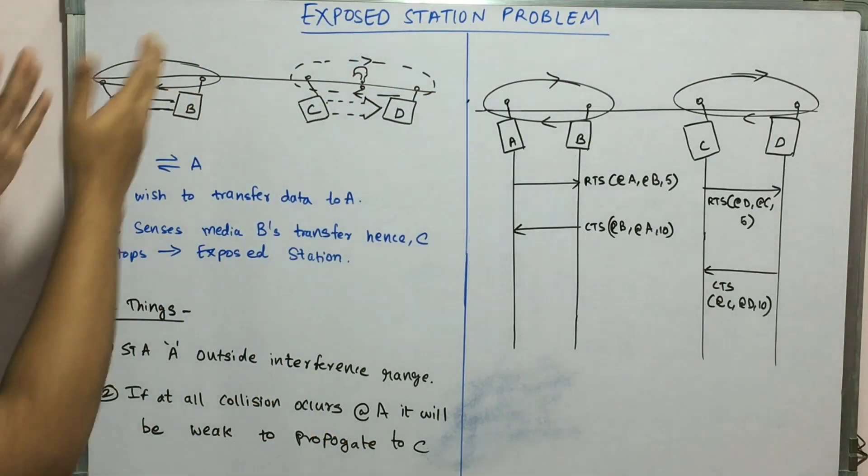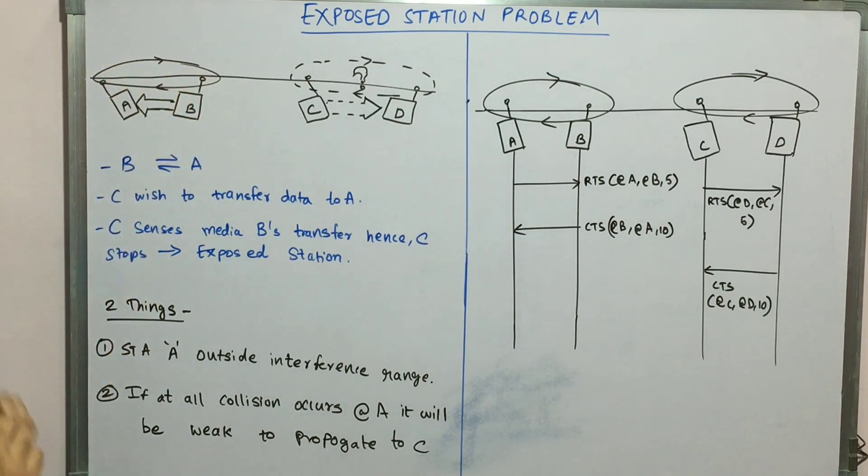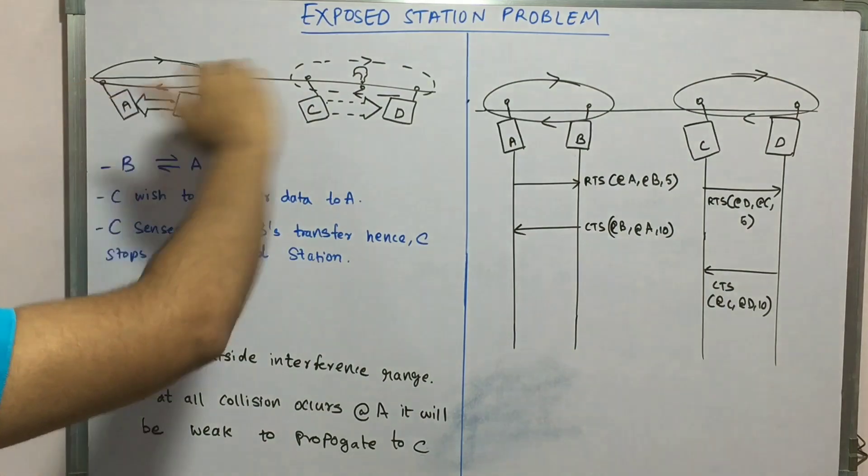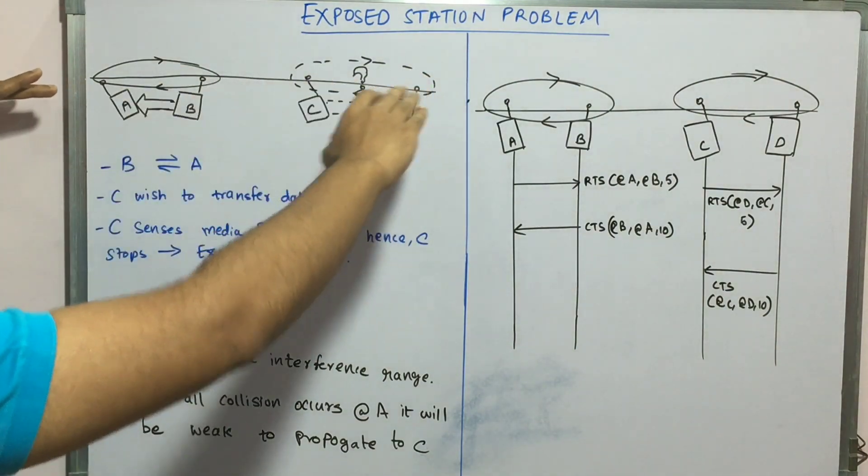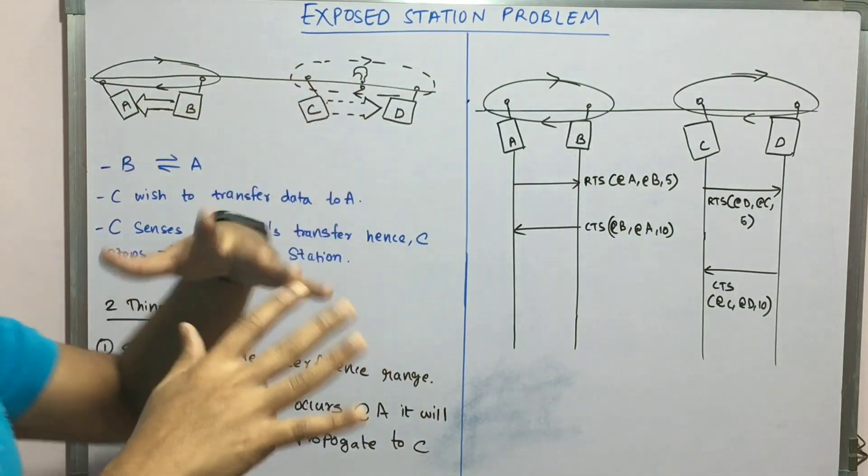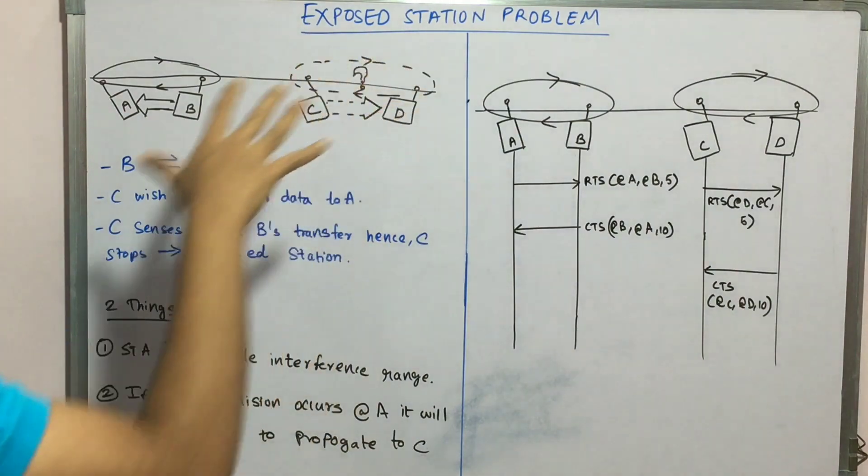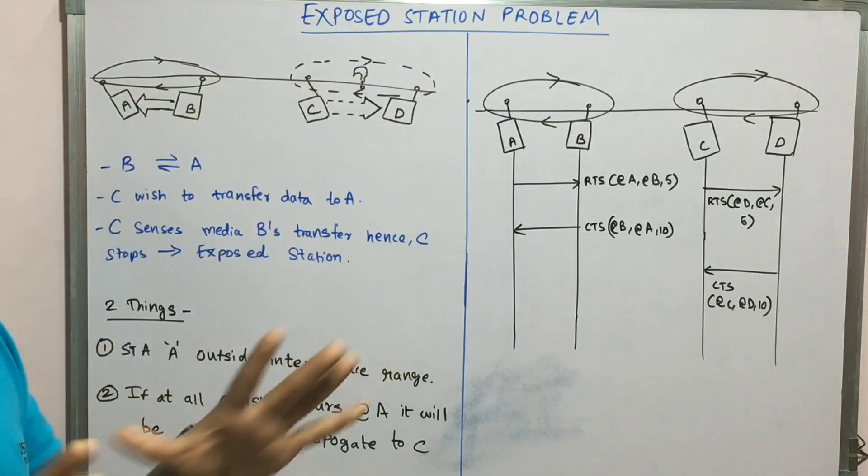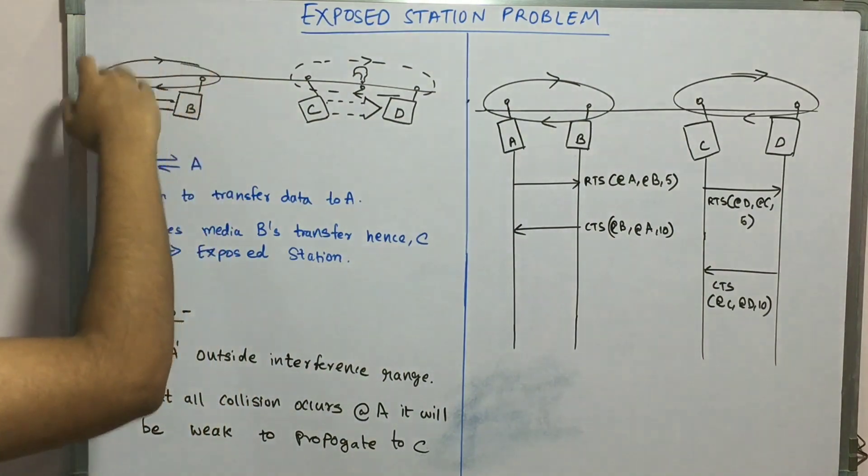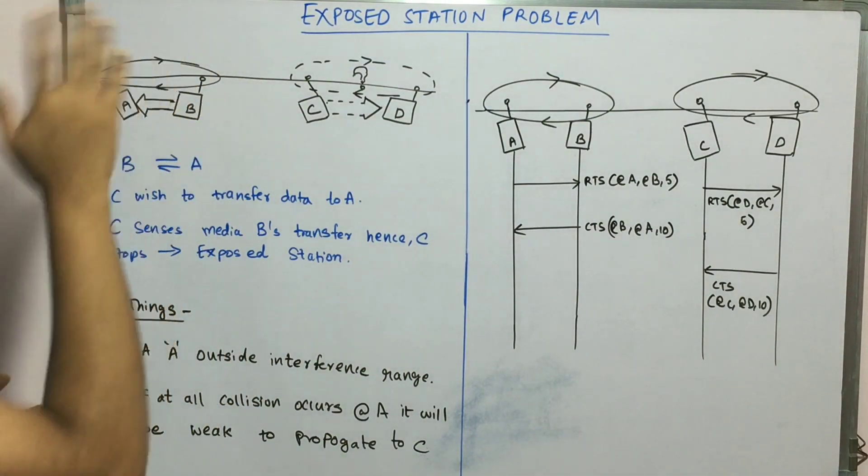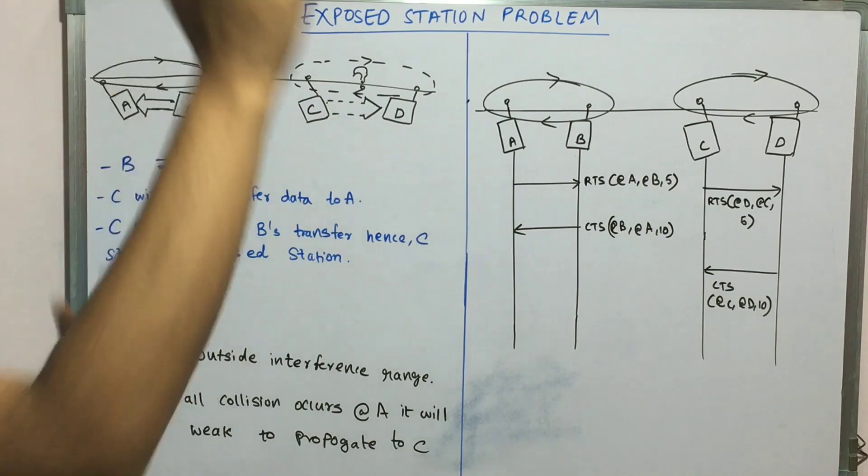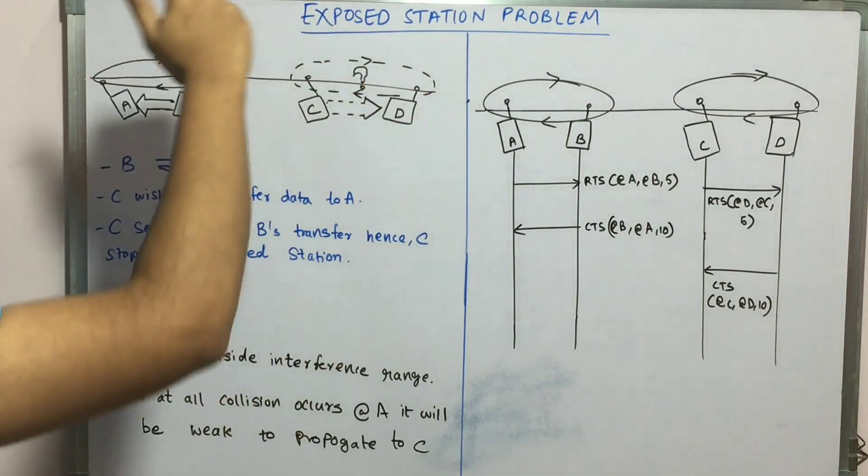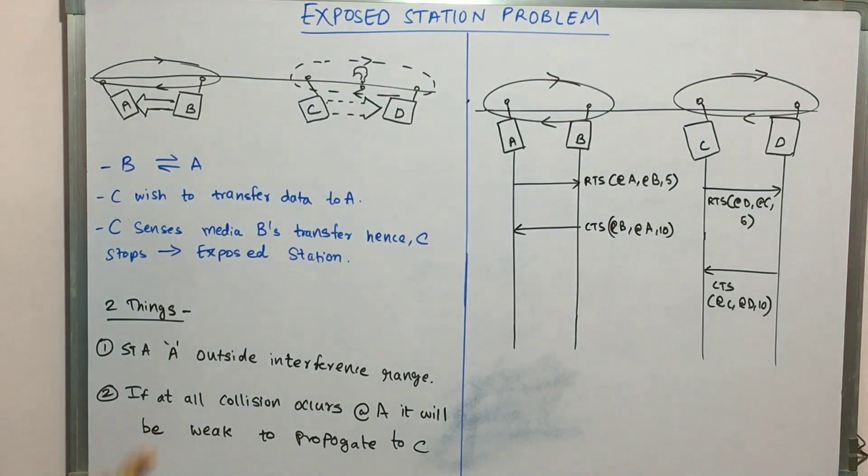If B is doing data transfer to A, assume there is a virtual line like this - this doesn't exist in real life, but to make the concept clear, assume a virtual line is there. Suppose data transfer happens where B is transferring to A, and at some distance away, C and D are there.